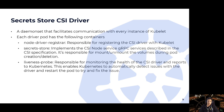How does it work? The Secret Store CSI driver uses a DaemonSet because we need communication with all kubelet instances. Each node gets a pod from the DaemonSet, and each of these pods is composed of three containers: the node registrar, the secret store, and the liveness probe. One pod with three containers per node, controlled by the DaemonSet.